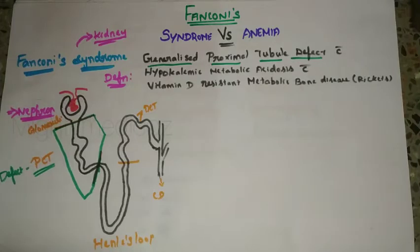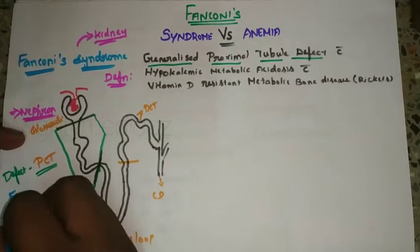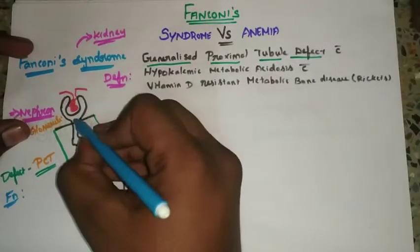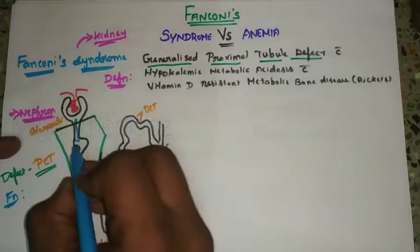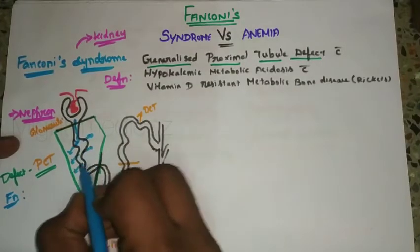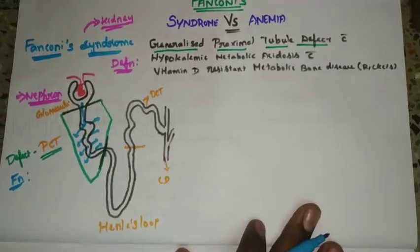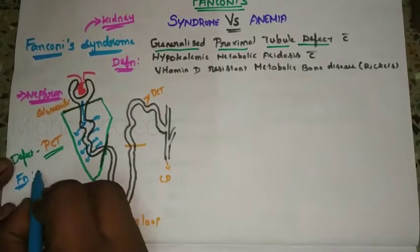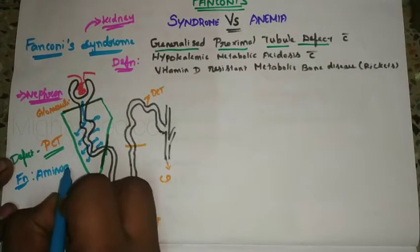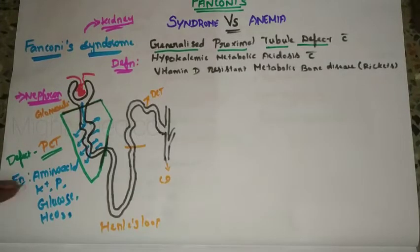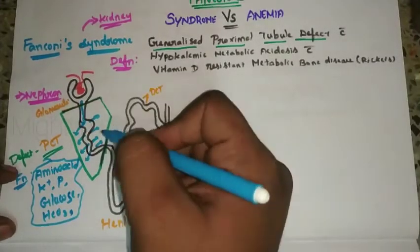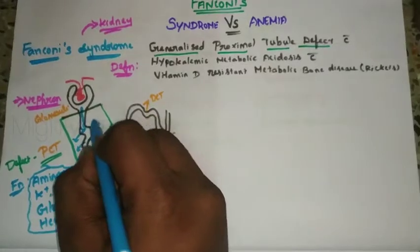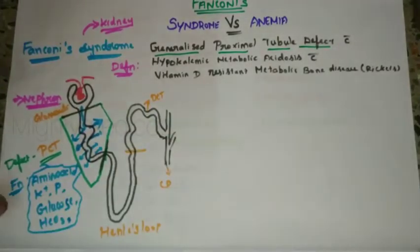What is the normal function of the proximal convoluted tubule? The proximal convoluted tubule reabsorbs essential components filtered at the glomerulus, including amino acids, potassium, phosphorus, glucose, and bicarbonate. All these components are important for our body, which is why they are reabsorbed at the proximal convoluted tubule.